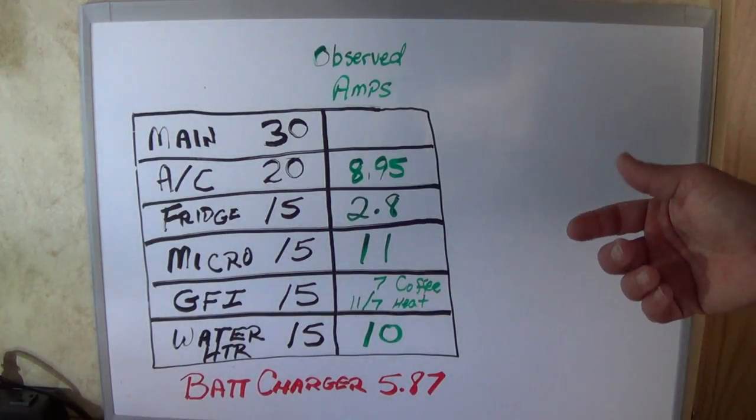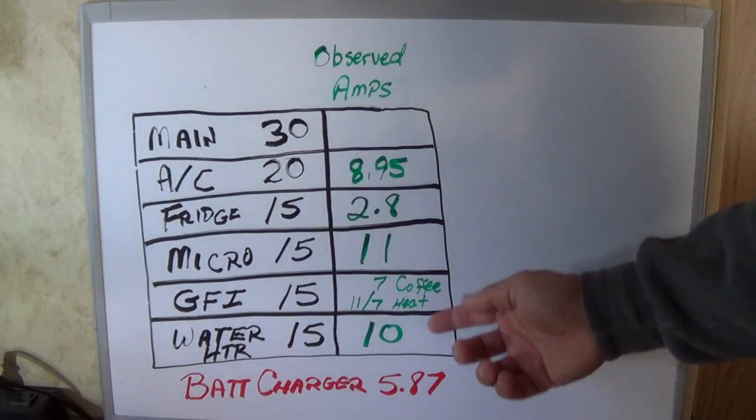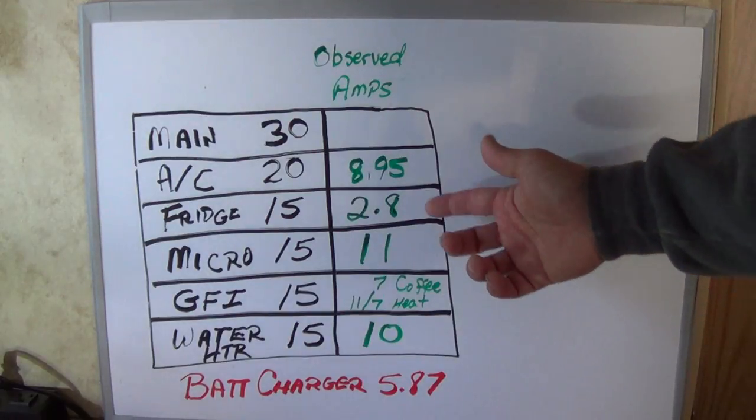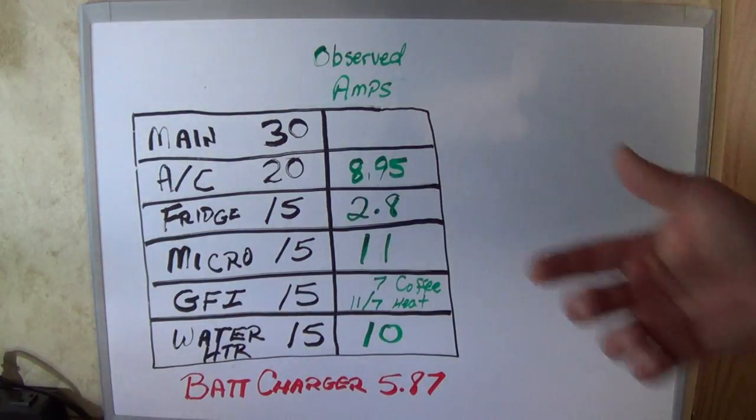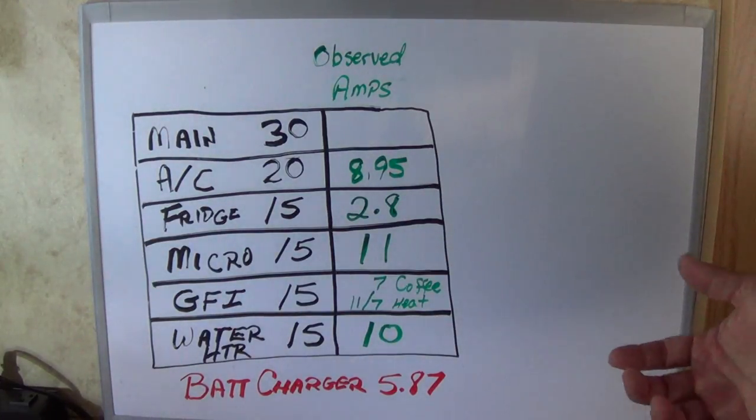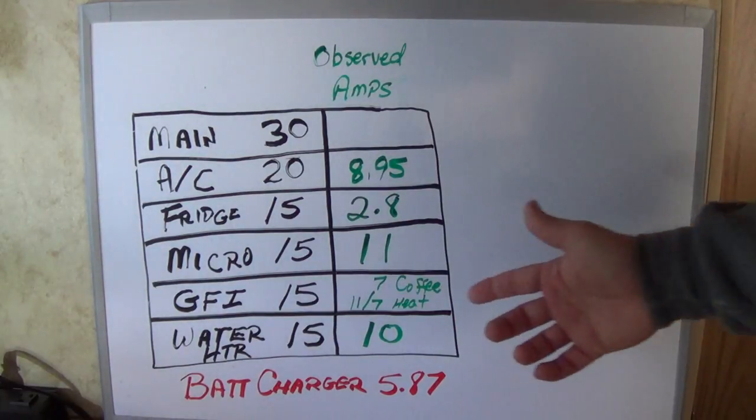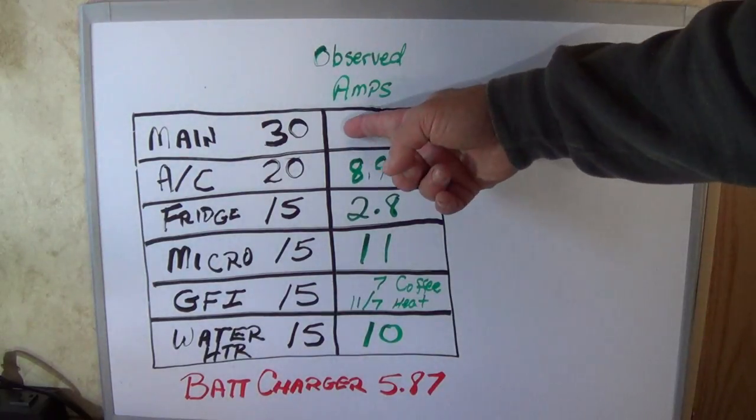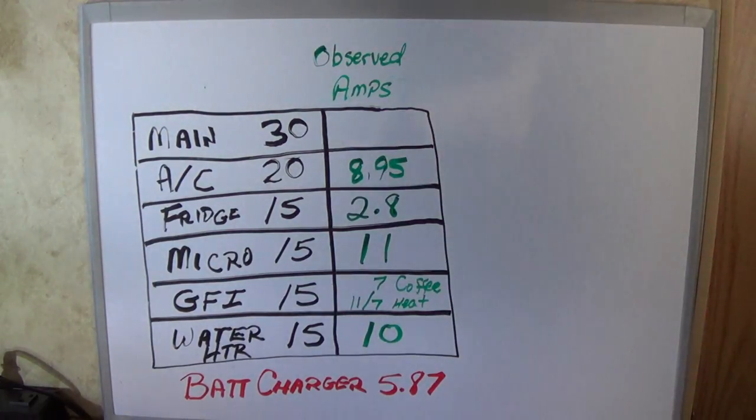Just to kind of look at it, if you leave your water heater on to keep that from freezing and your fridge, if you leave your fridge turned on, you're pretty close to 13 amps. If you run anything else in this travel trailer, you're not going to pop this main fuse, but you will burn up your cord.